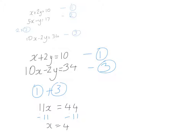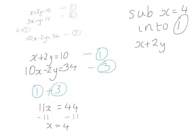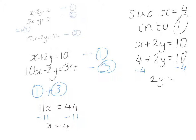Now I substitute x equals 4 into equation one, which is x plus 2y equals 10. So that becomes 4 plus 2y equals 10. Subtracting 4 from both sides gives 2y equals 6. Dividing both sides by 2 gives y equals 3. So the solution to this pair of equations is x equals 4, y equals 3.